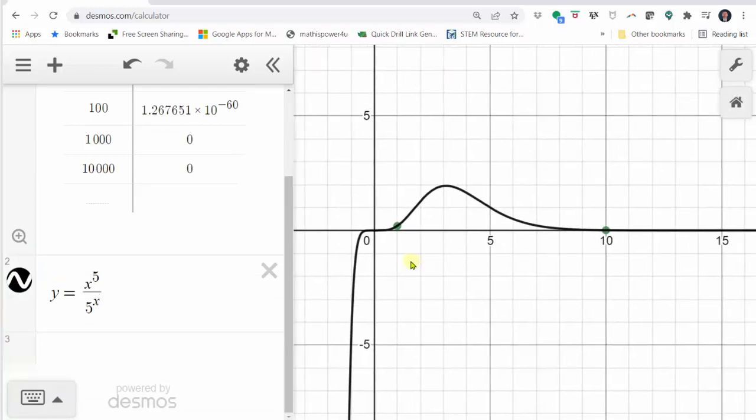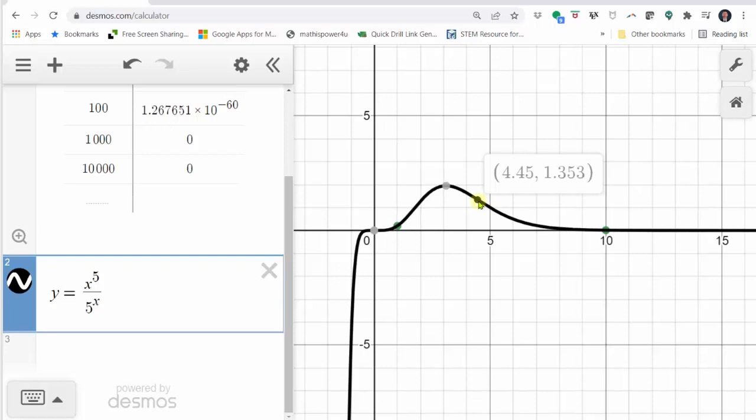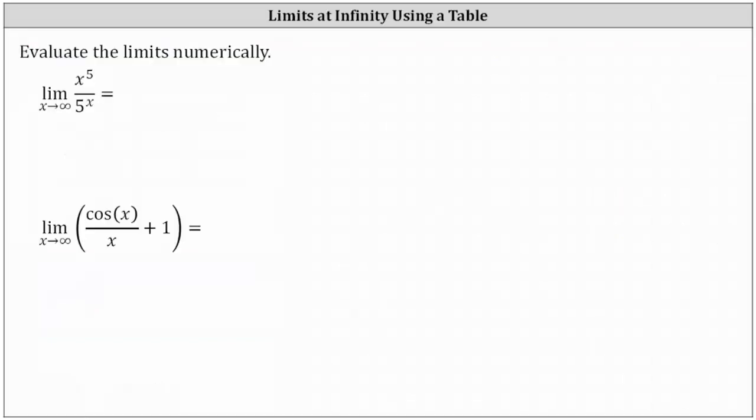And now on the right of the screen, we can see the graph of the function. We could adjust the window by clicking on the wrench in the upper right-hand corner, but this graph looks pretty good. If we click and hold on the graph, a point will show that we can then drag. Notice if we drag this point to the right, we can quickly see the function value or y value is approaching zero as x approaches infinity. So our first limit is equal to zero.